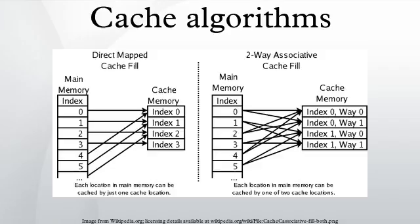Giving this line another chance to be accessed before being replaced. The size limit on the protected segment is an SLRU parameter that varies according to the I/O workload patterns. Whenever data must be discarded from the cache, lines are obtained from the LRU end of the probationary segment.